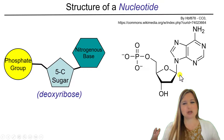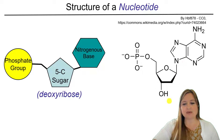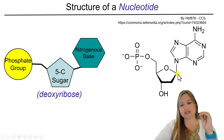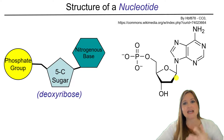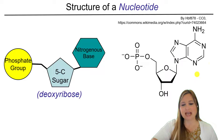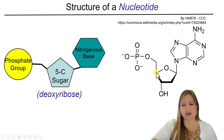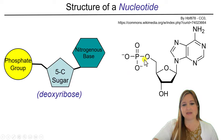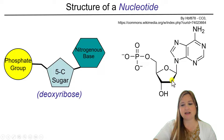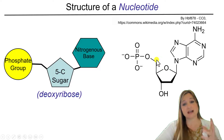Anytime you see a kink or a little bend in the molecule, there's going to be a carbon there. It's just that they don't put it in because there are lots of carbons and it would get intimidating to look at. So we can count those different carbons: here's one carbon, two is here, three is here at this bend, the next bend is four, and then the fifth carbon is actually sticking up over here. That's where the phosphate group binds — at the fifth carbon of this sugar. So even though they're not drawn, there is a carbon at each of those five positions.